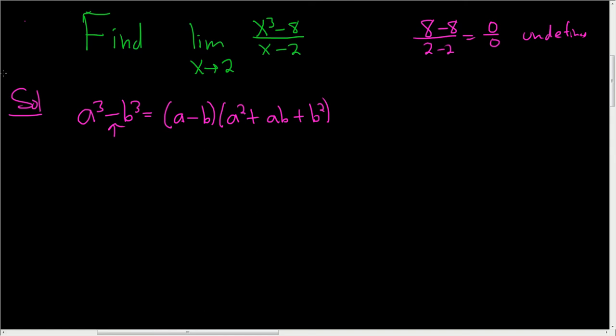So in this case, we can rewrite our limit as follows. This is the limit as x approaches 2. Well, x cubed minus 8, so in this case, it's x cubed minus 2 cubed. So a is x, and b is 2.